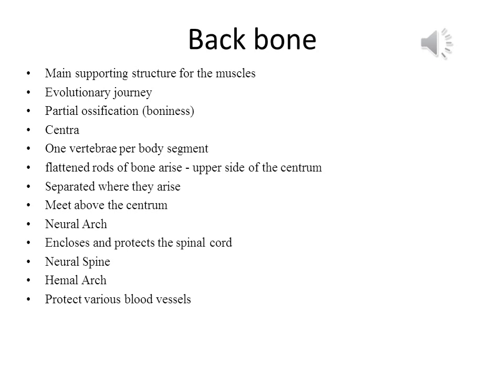Two flattened rows of bone arise from the upper side of the centrum. They are separated where they arise but meet a little way above the centrum. The space that is formed is known as the neural arc. Collectively, the neural arcs of all the vertebrae form a tube that encloses and protects the spinal cord. In most species of fish, the combined bony rods rise up as a neural spine above the neural arc. In some species, such as salmon, a second pair of rods extend downwards, creating a hemal arc, which serves to protect various blood vessels.